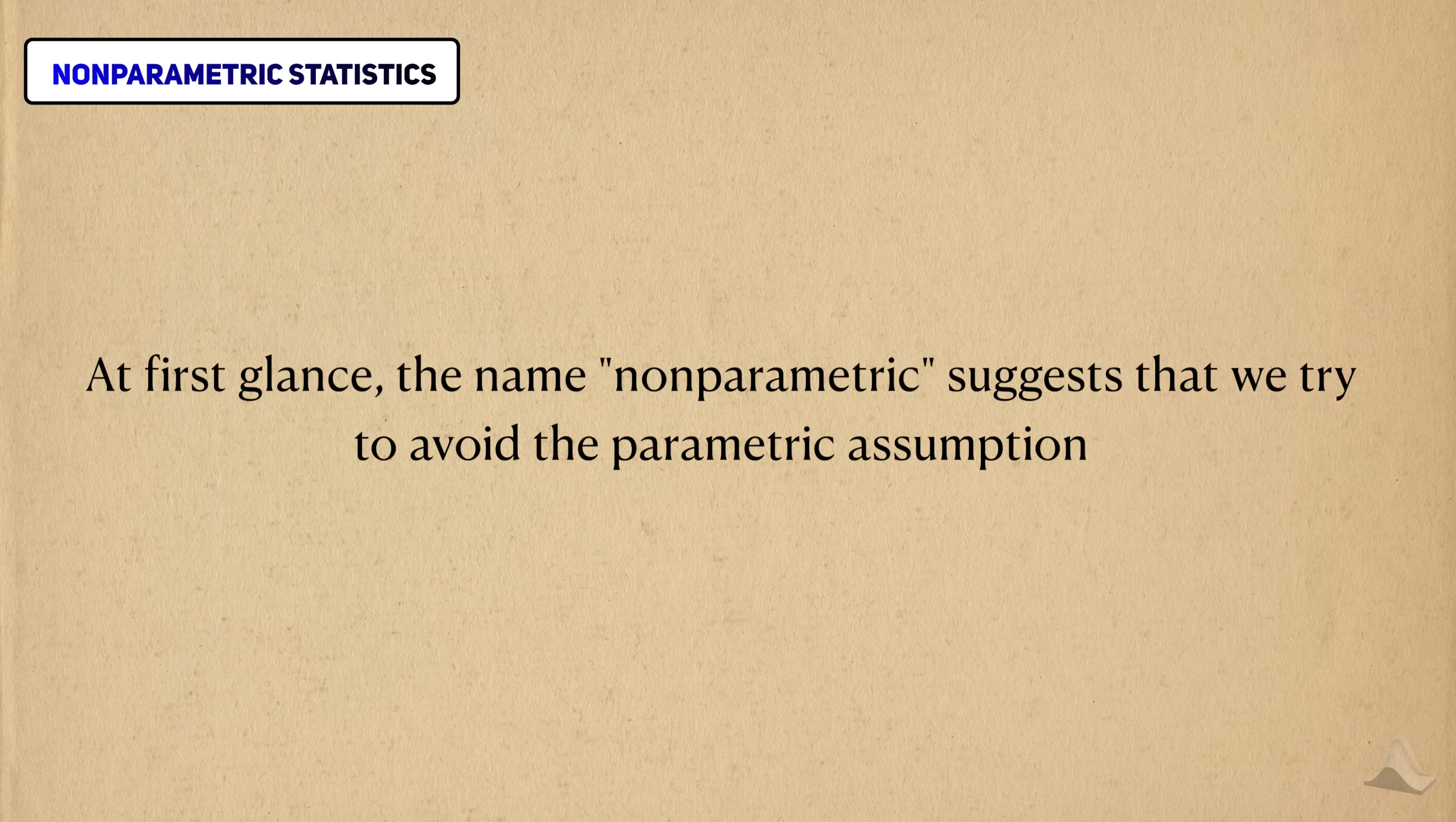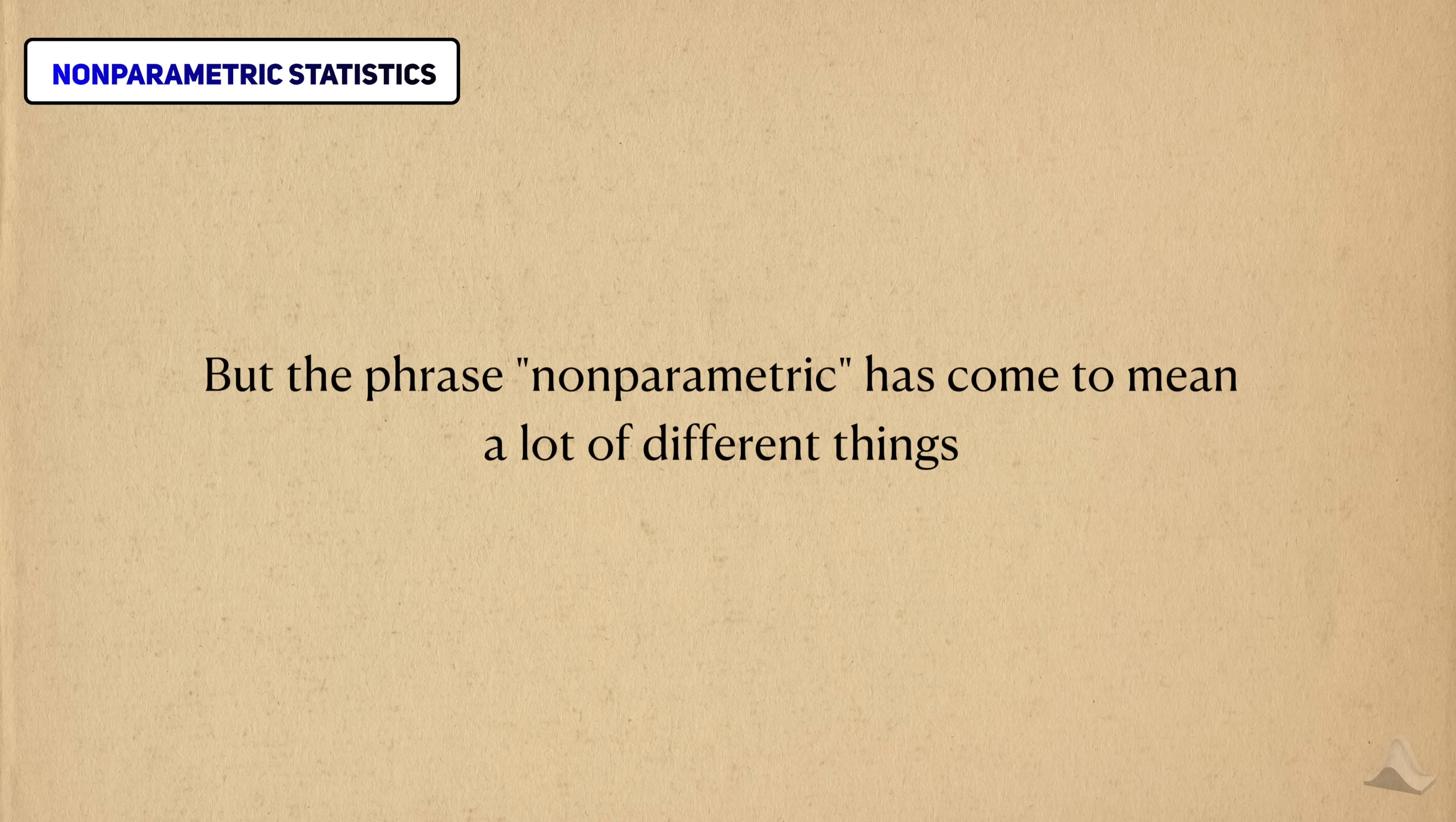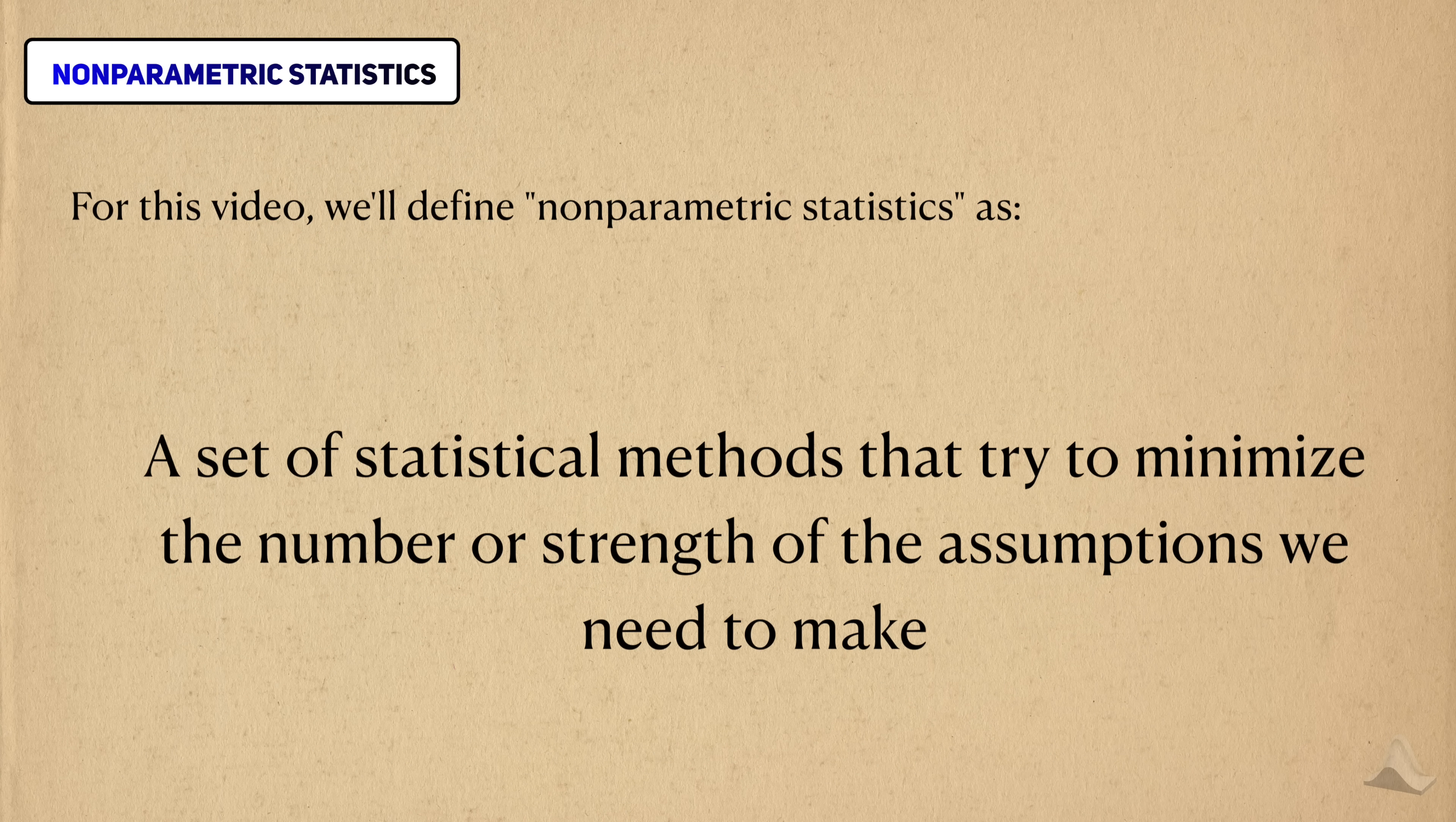This is where non-parametric statistics shines. Based on its name, you might think that non-parametric statistics is just a branch of statistics where we avoid the parametric assumption. While that's true, it's not the entire picture. Statisticians really suck at naming things. So the phrase non-parametric has come to mean a lot of things. Some non-parametric methods avoid the parametric assumption, while others avoid different types of assumptions we might make, like the specific form of a regression. In non-parametric statistics, you're still trying to learn from the data, but you're also trying not to assume too much about it. For the purposes of this video, it's useful to think of non-parametric statistics as a set of methods that try to minimize the number or strength of the assumptions we need to make.